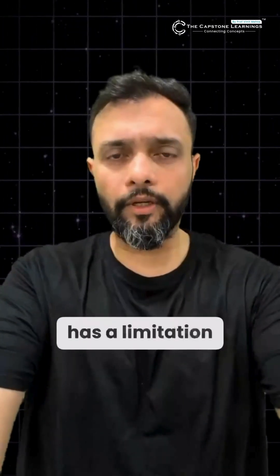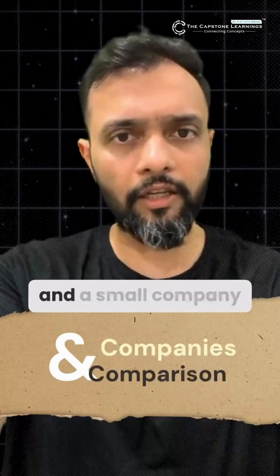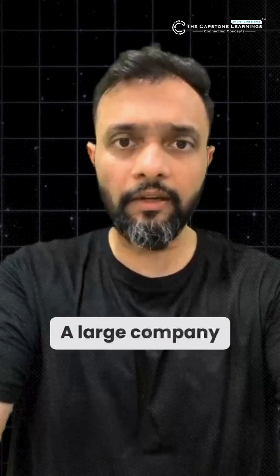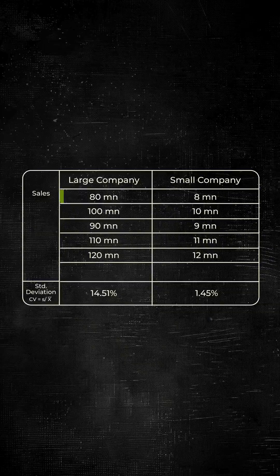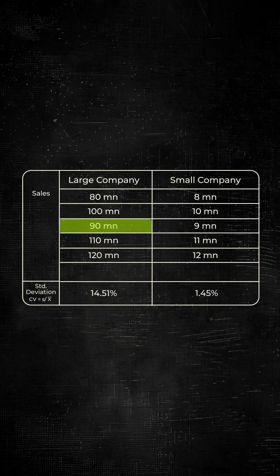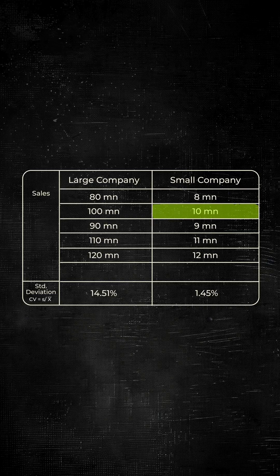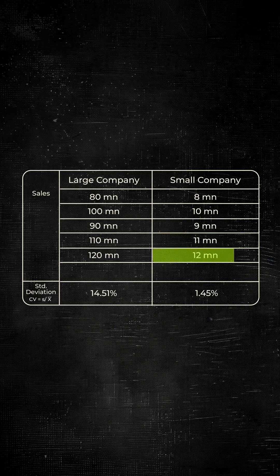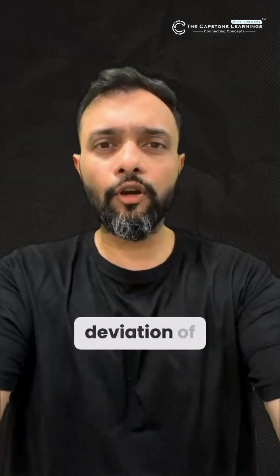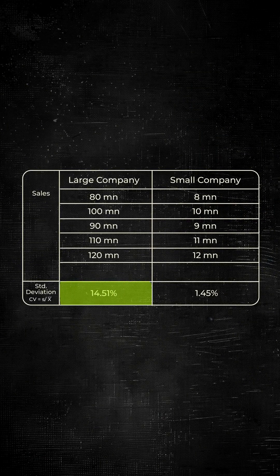Standard deviation has a limitation. For example, let's say there are two companies — a large company and a small company. The large company's revenue over the last five years is 80, 100, 90, 110, and 120 million dollars. The small company's sales are 8, 10, 9, 11, and 12 million dollars. If you calculate the standard deviation, the large company's is 14.5 and the small company's is 1.45.